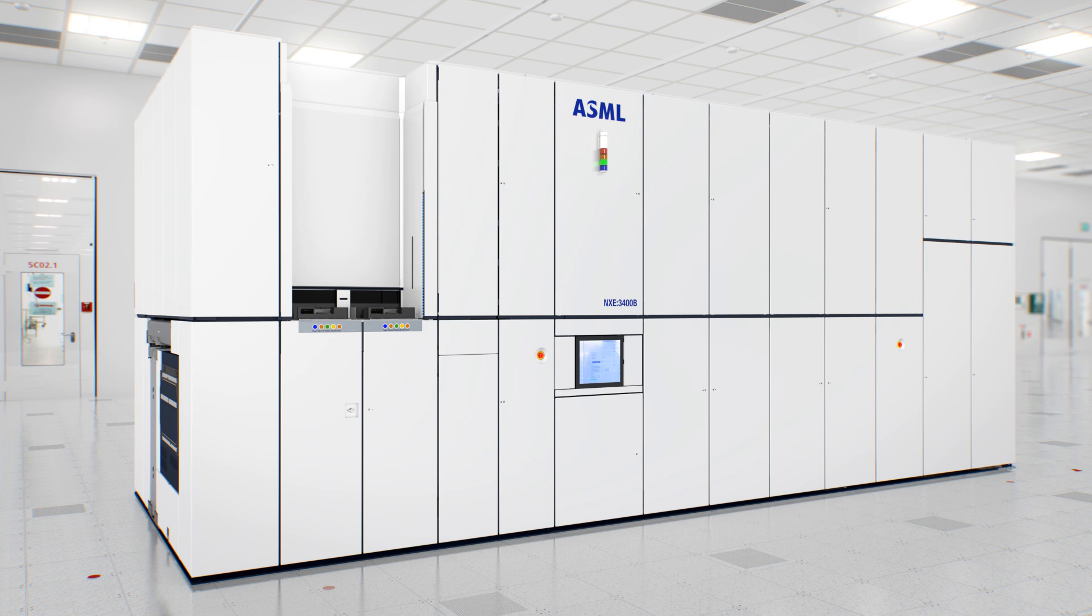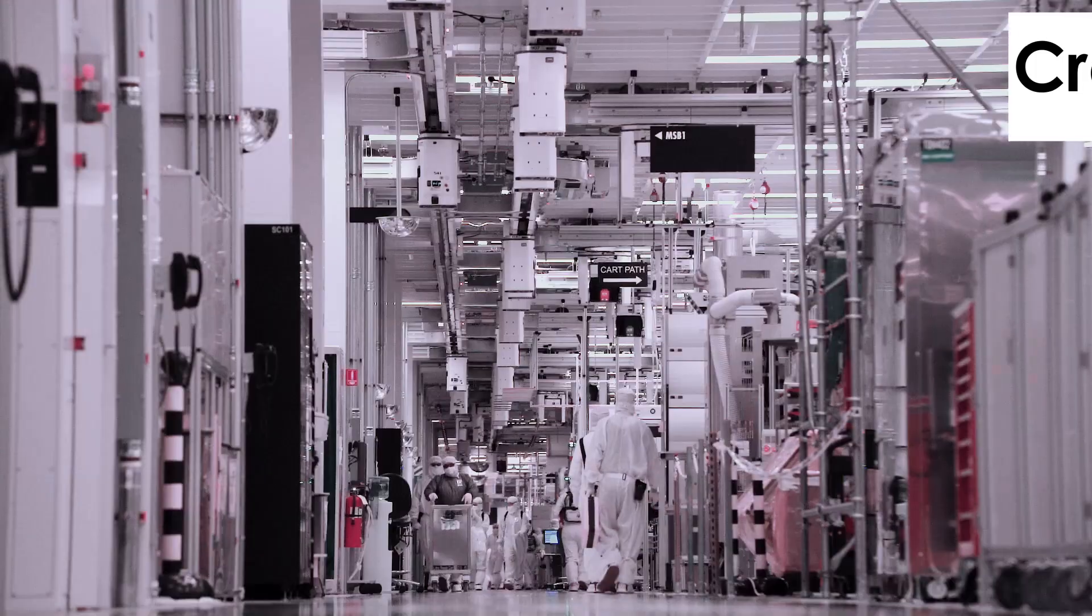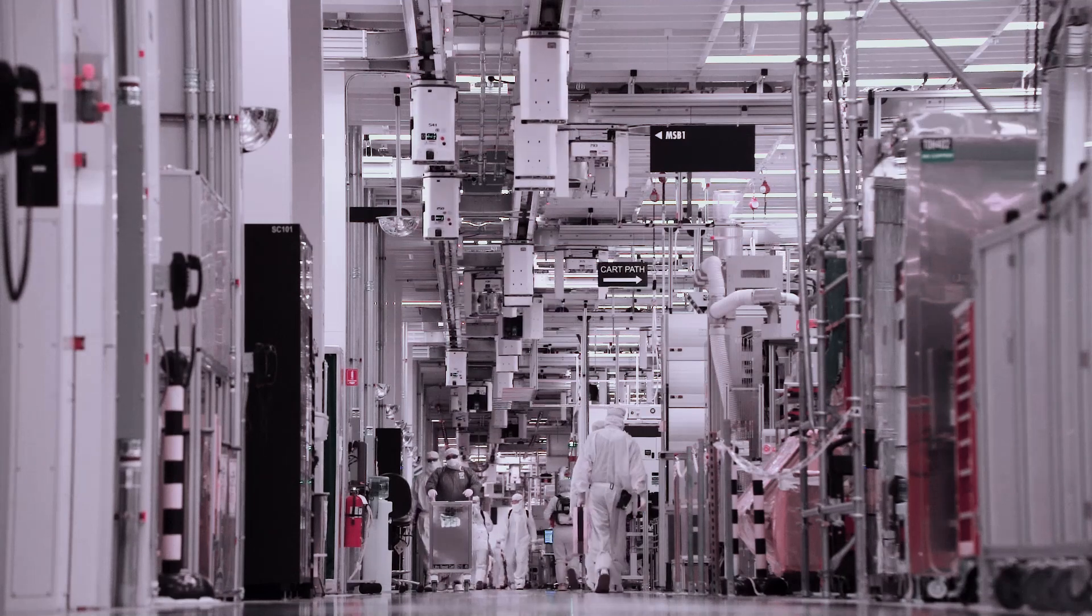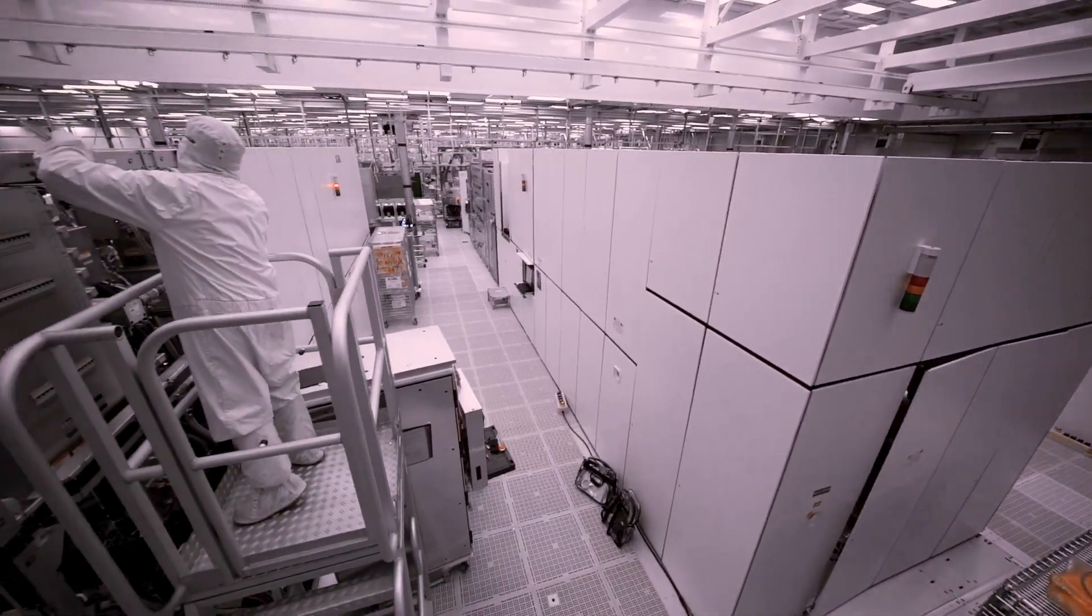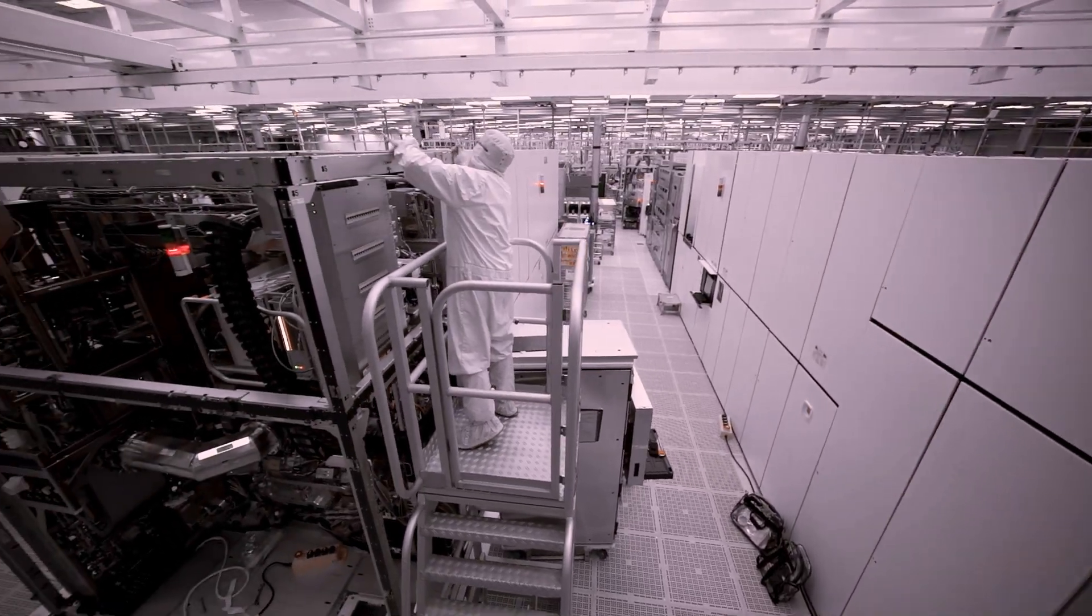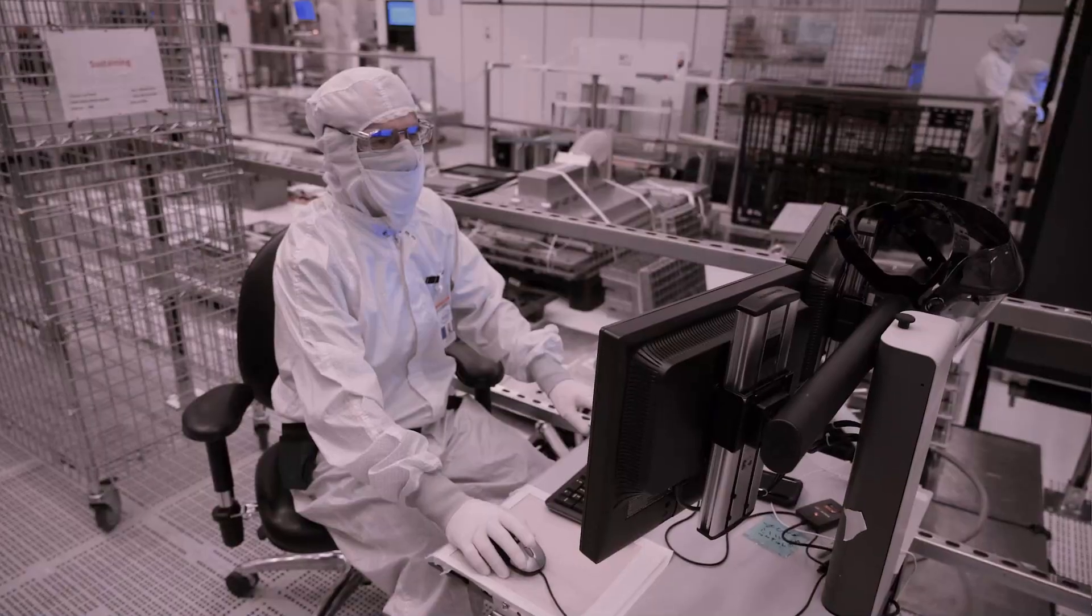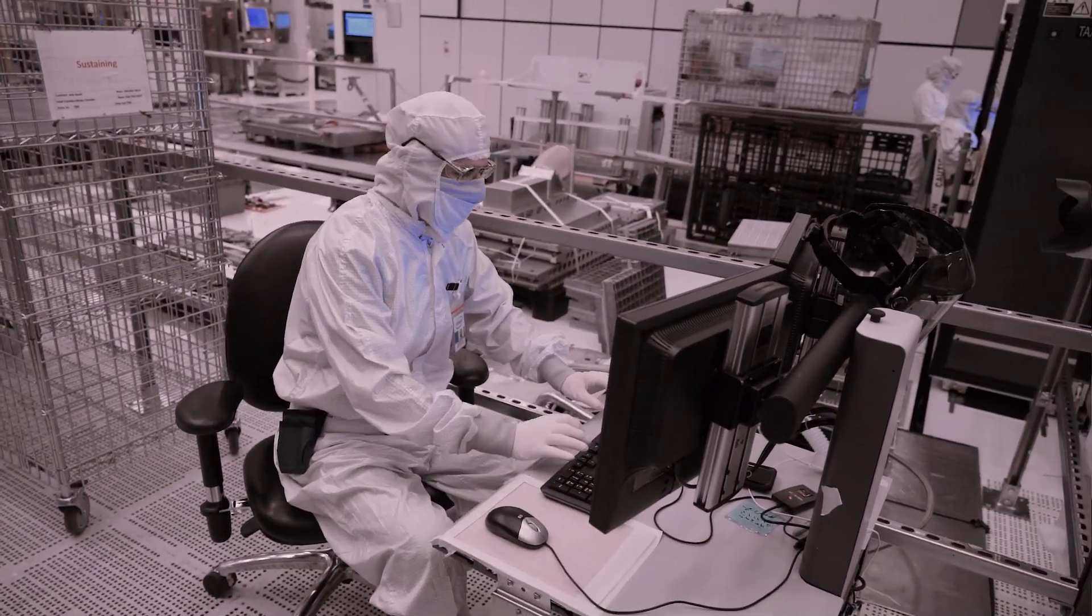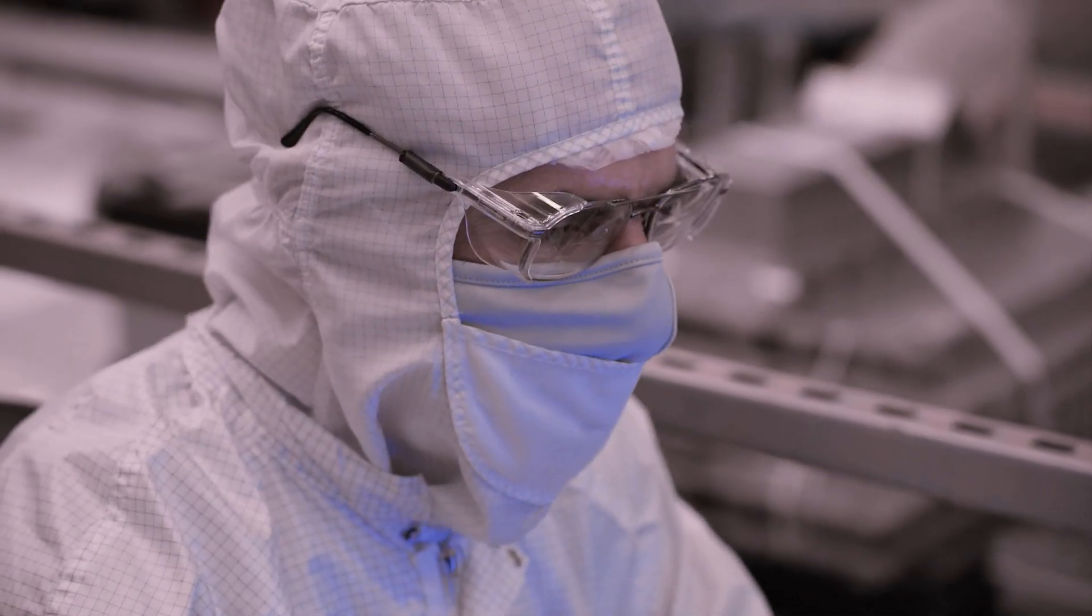ASML is the only company that currently creates machines capable of producing chips at this scale. Each machine can cost upwards of $300 million, and a chip fabrication plant would need anywhere from 10 to 20 of them. Plus the massive clean room for these and all of the other machines that are part of the chip making process need to be stored in, causing it to be incredibly cost prohibitive for most companies to get into the market.